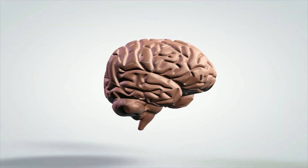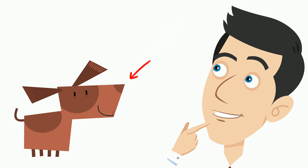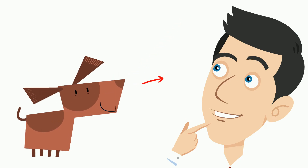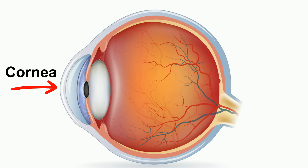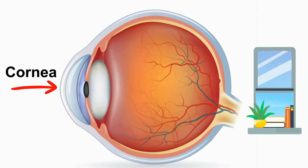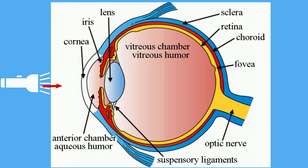When rays of light bounce off an object like a dog, they first strike your eyes and pass through a structure known as the cornea. Your cornea is a clear membrane, much like a window, and covers the front of your eyes. As light passes through the cornea, it then passes through a fluid-filled chamber and reaches the pupil.